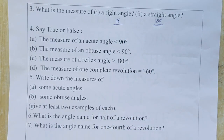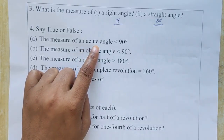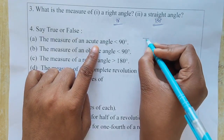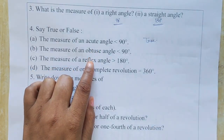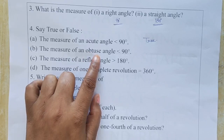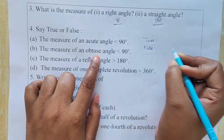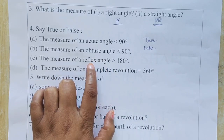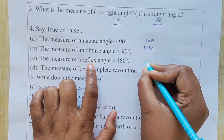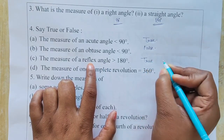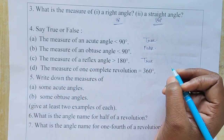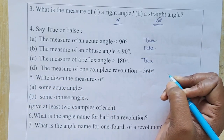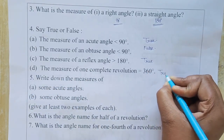Fourth question — Say True or False. A) The measure of an acute angle is less than 90 degrees — True. B) The measure of an obtuse angle is less than 90 degrees — False, because obtuse angle is greater than 90 degrees. C) The measure of a reflex angle is greater than 180 degrees — True. D) The measure of one complete revolution is 360 degrees — True.